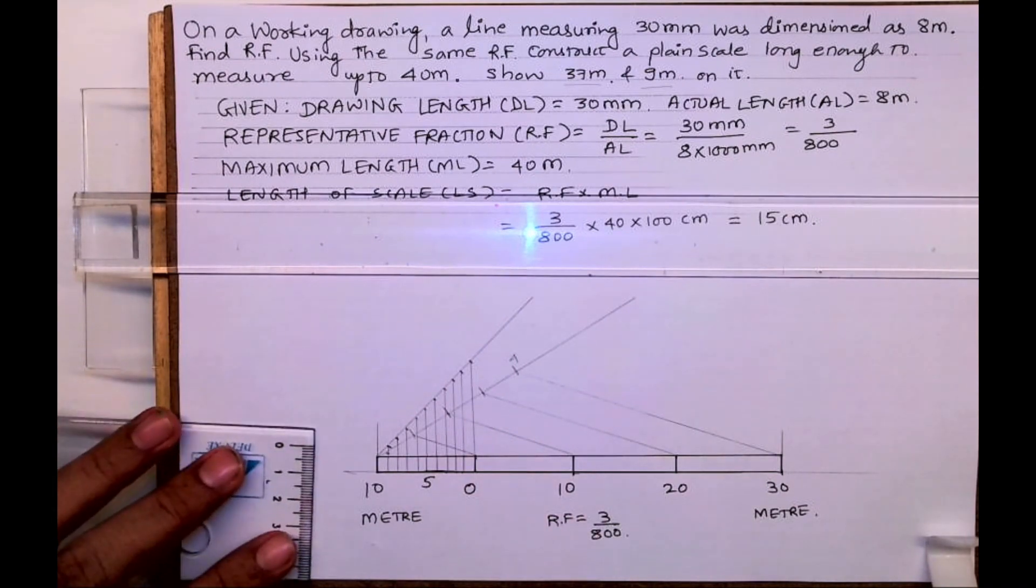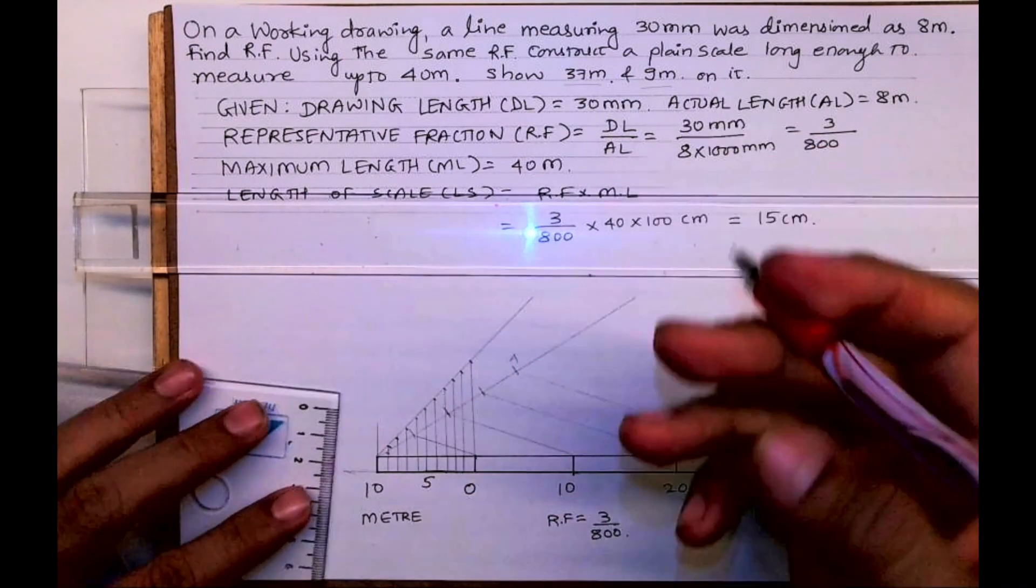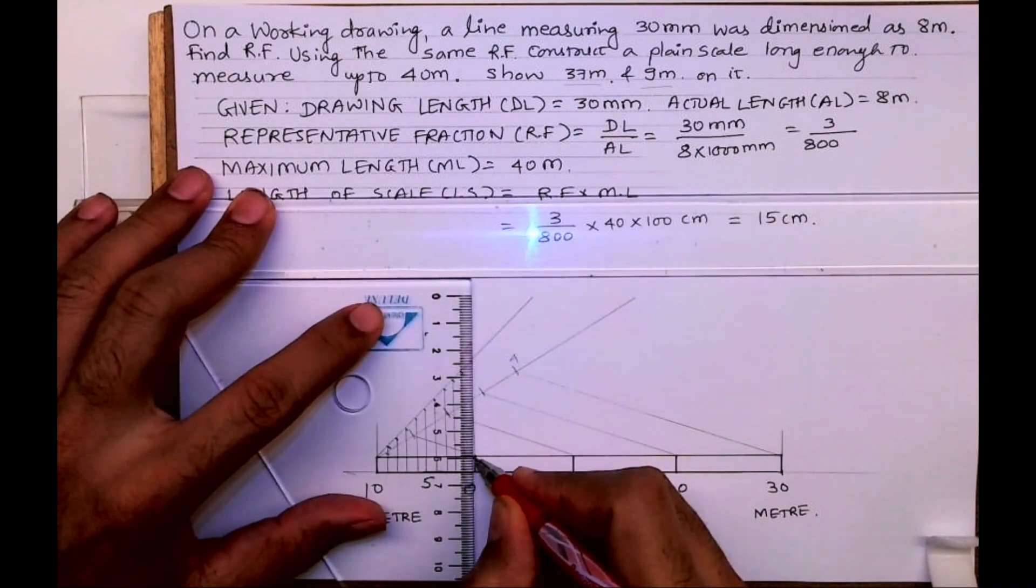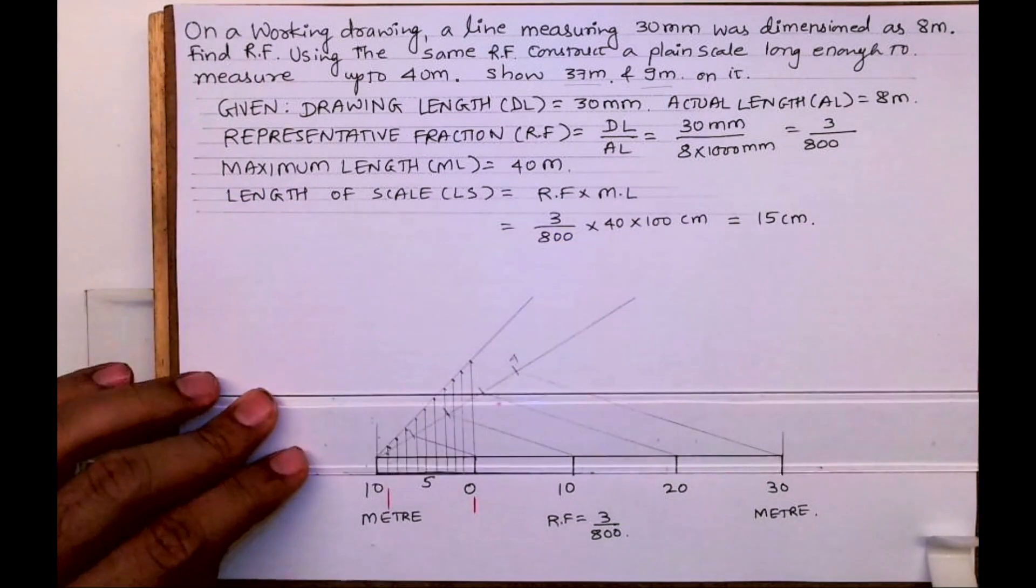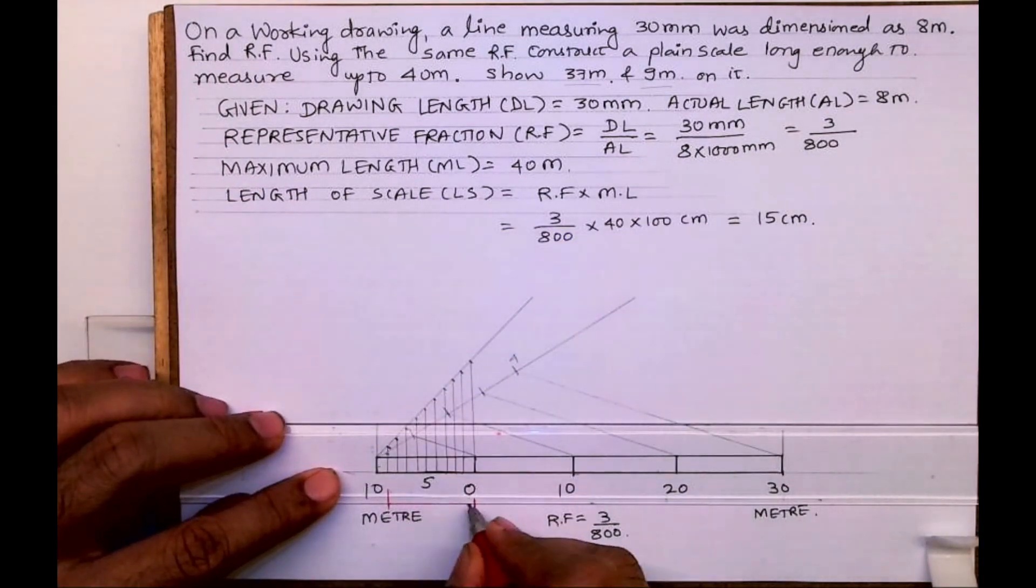See over here, we have divided the first block into 5 part or 10 parts. Now I want to mark 9 meters, so I will take 9 over here. So this is 9 meter.